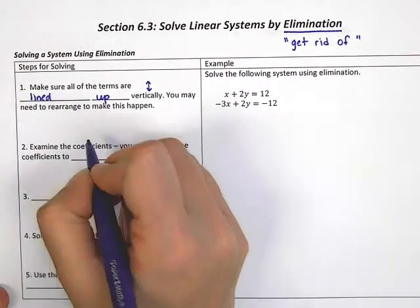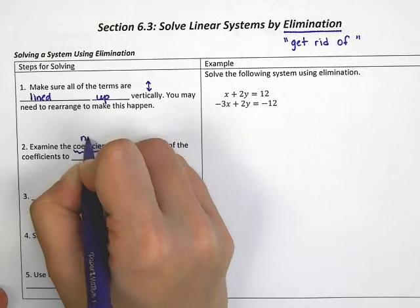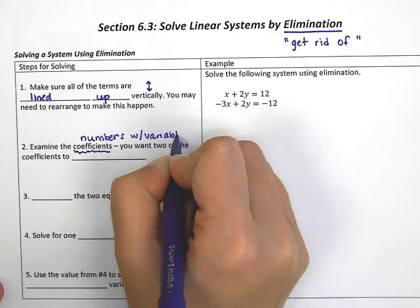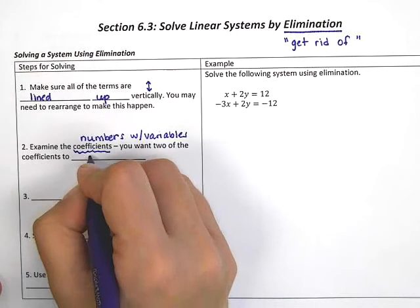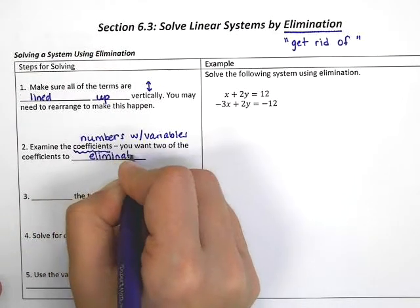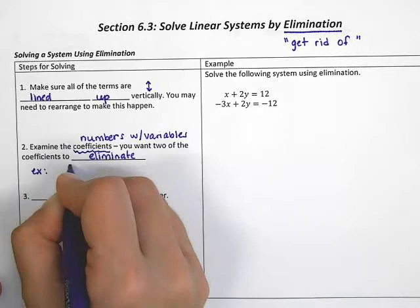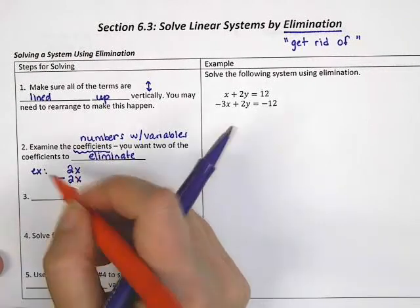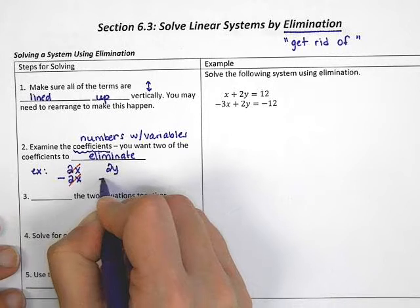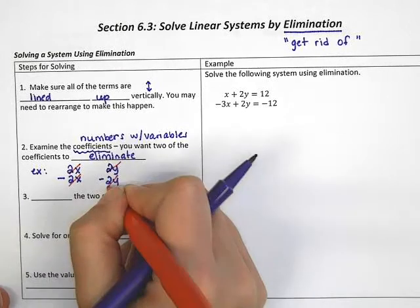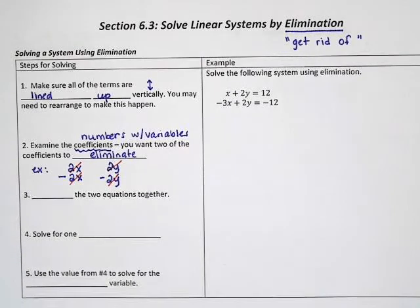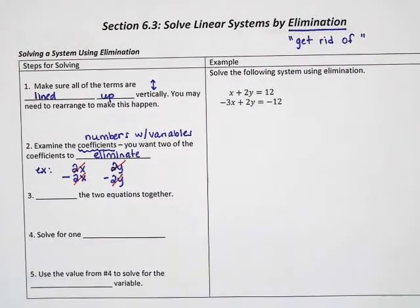Now you want to examine the coefficients — the numbers with the variables. Your goal is that you want two of the coefficients to eliminate each other. For example, if you have a 2x and a negative 2x, those would cancel each other out. Or if you have a 2y and a negative 2y, those would cancel each other out. You're looking for the same number — 2, 3, or 4 — but with opposite signs, so one is positive and the other is negative.